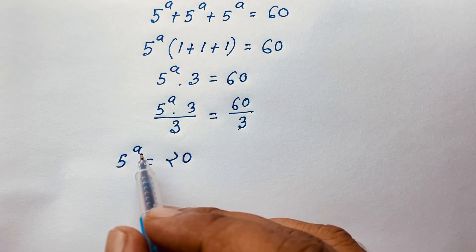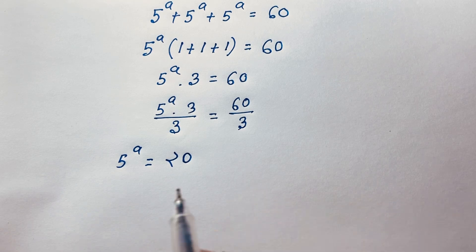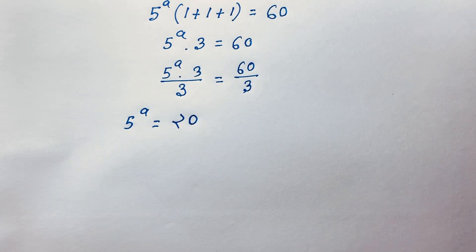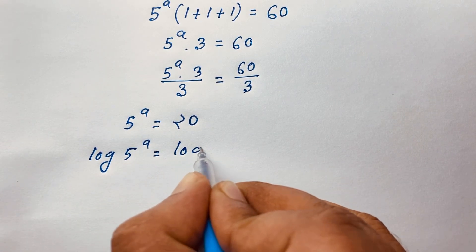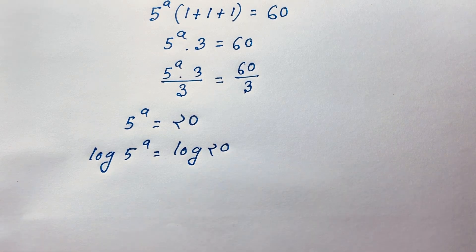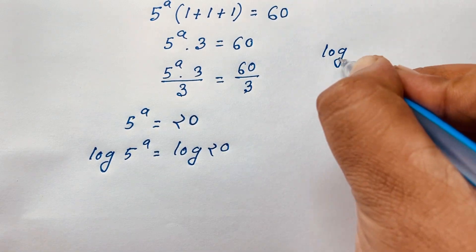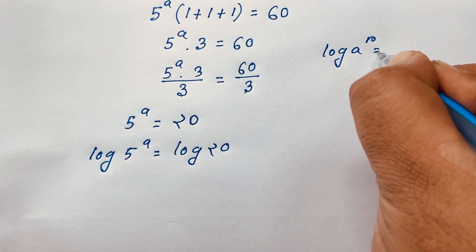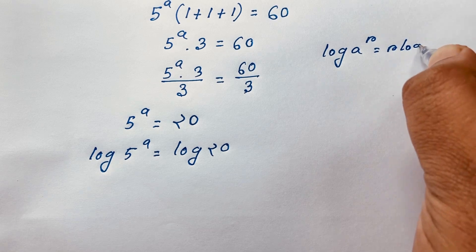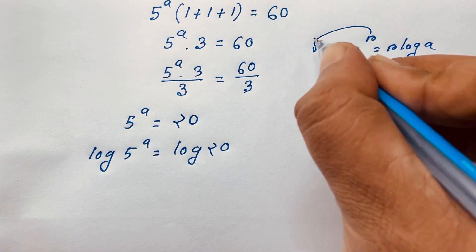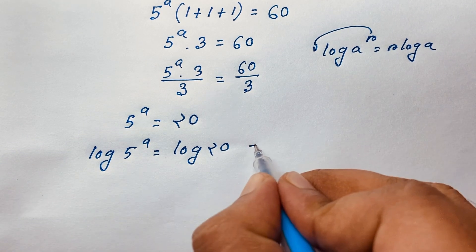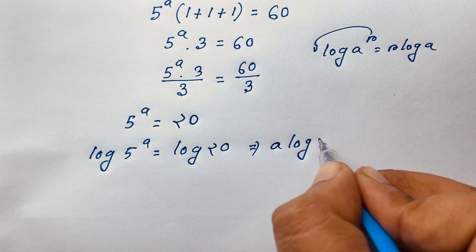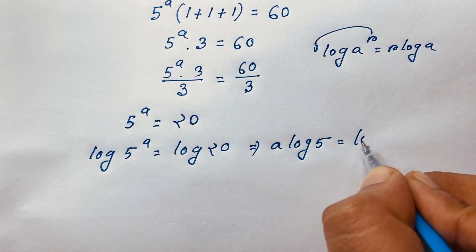To find the value of A in this exponential math problem, I apply the natural log to both sides. So log of 5 to the power A is equal to log 20. Using the logarithm power rule — log A to the power R equals R times log A — the exponent moves to the front, giving us A times log 5 is equal to log 20.